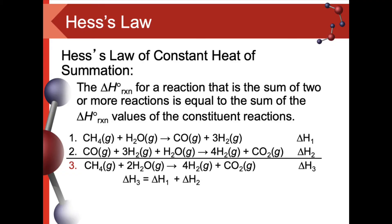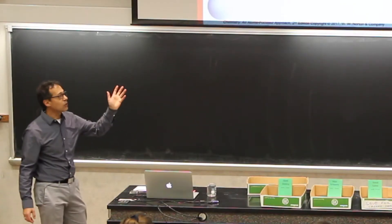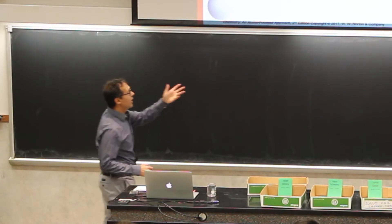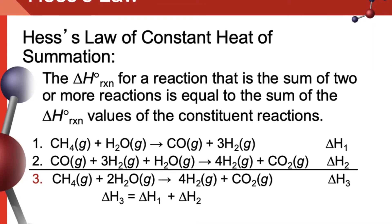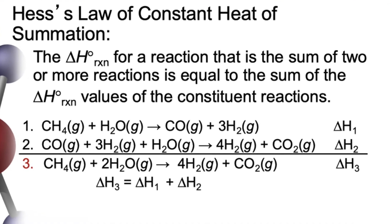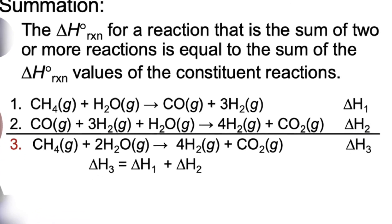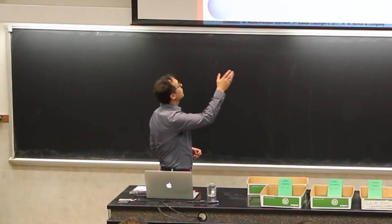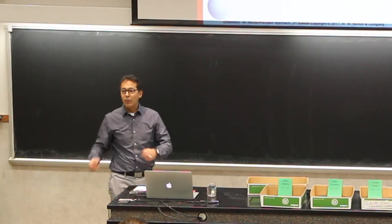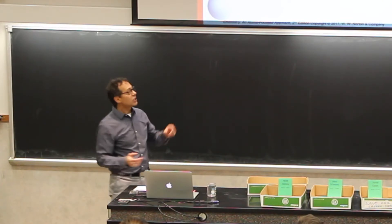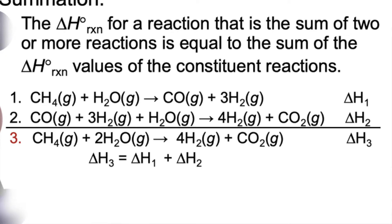Here's an example — you don't need to write this down, just look at it for a moment. The idea is equation number three. Equation three takes methane, which is natural gas, reacts it with water, and gives us hydrogen and carbon dioxide. This is an industrial way we produce hydrogen. If we imagine the arrows in these equations as equal signs, things on either side can cancel out.